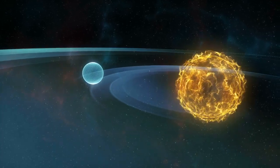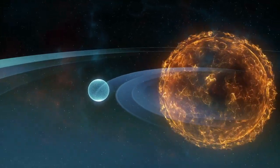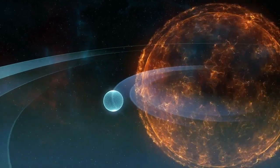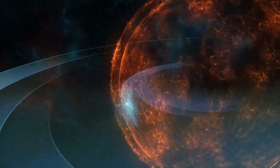Without this shield, the solar wind, a stream of charged particles released by the Sun, would strip away the Earth's atmosphere over time.